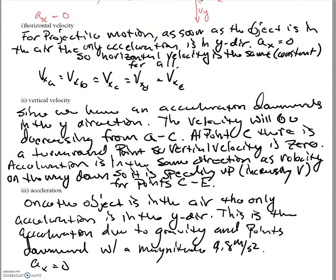For acceleration, the acceleration in the x-direction is zero by definition of projectile motion. Projectile motion says the only force acting on the object is gravity, which means we only have acceleration in the y-direction — the acceleration due to gravity. For a problem like this, you need to highlight what is the same for all intervals, what's different, and address each of those issues.